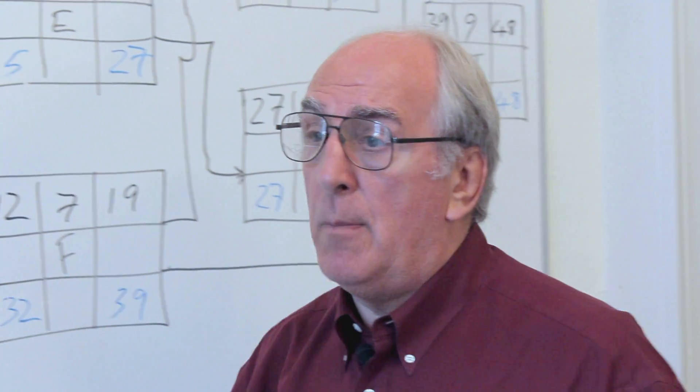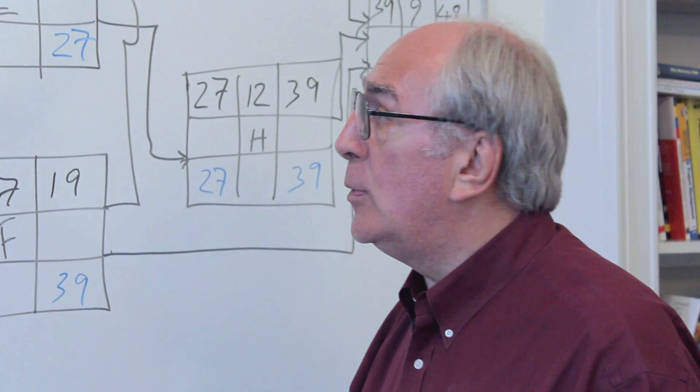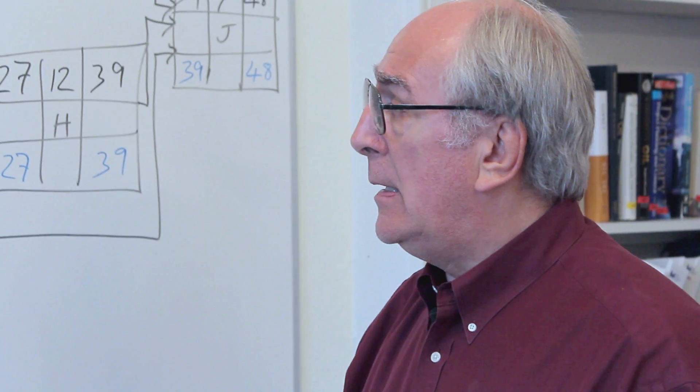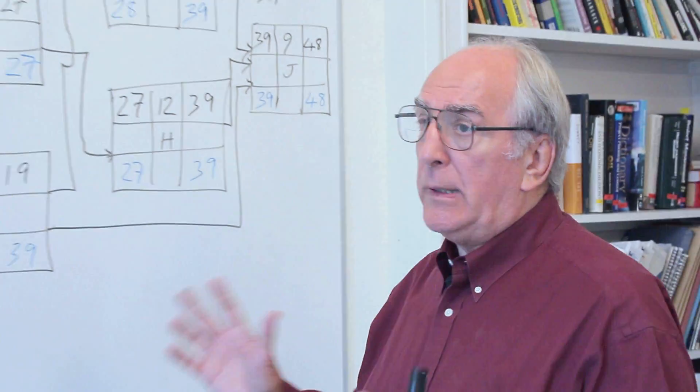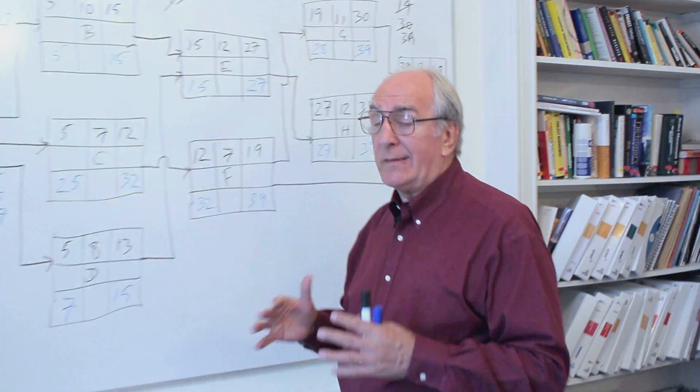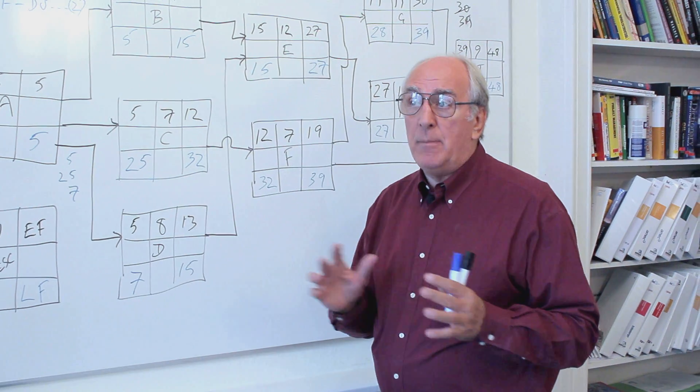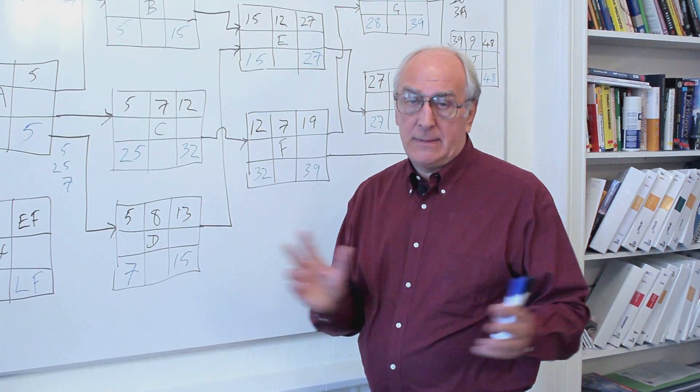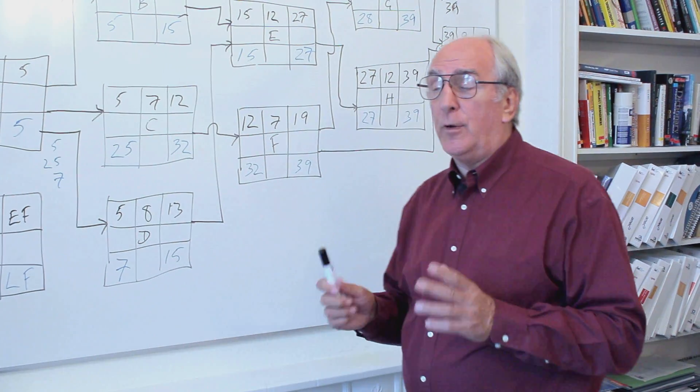So this activity has got a more important quality and you're beginning to get the idea of where this word 'critical' comes from, because these are critical activities. So the property we're alluding to has been known over the years as slack and is now more often known as float. It's the amount of time contingency that exists on any activity, the amount of movement in time that activity can have before it affects the end date.